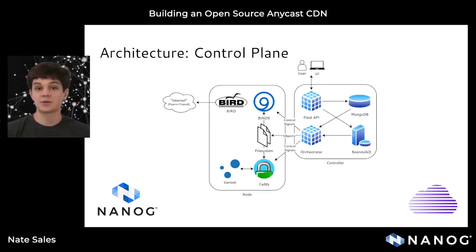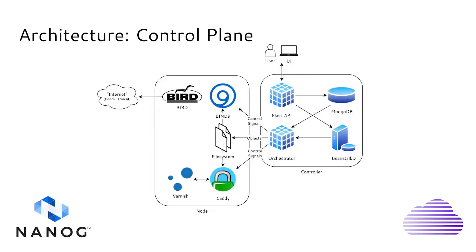In terms of control plane architecture, the network is designed around a single central control plane machine, built for simplicity in this V1. When a user interacts with the network — for example, editing a DNS record — they talk to a Flask API through a UI. Flask handles storing data in MongoDB, which is the database for persistent object storage: things like DNS records, back-end IP addresses of HTTP endpoints. Flask also sends messages to Beanstalk, a message queue that acts as a temporary store for operational changes, enabling fast asynchronous updates.